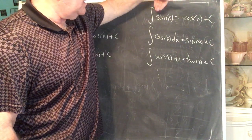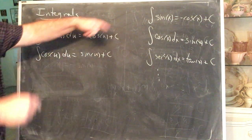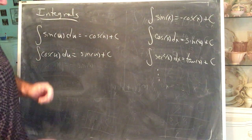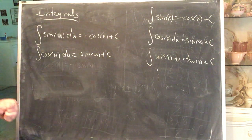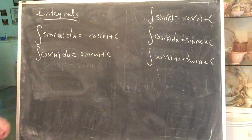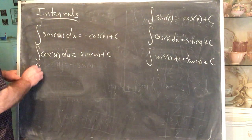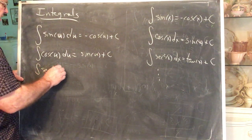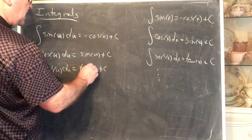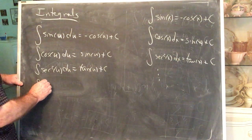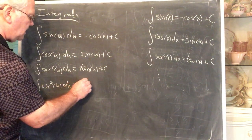We moved the negative sign around. The derivative of cotangent is negative cosecant squared — we do the same manipulation with the negative sign in that case, and similarly with the derivative of cosecant, which is negative cosecant cotangent. Put that all together: these become the basic forms. The integral of secant squared of u du is equal to tangent of u plus the constant. The integral of cosecant squared of u du is negative cotangent of u plus the constant.